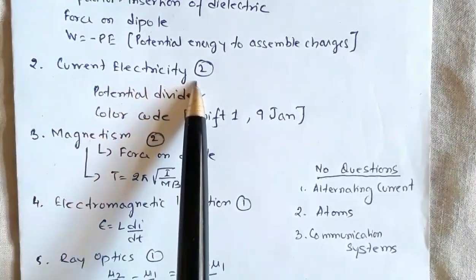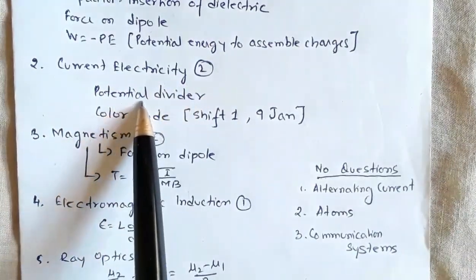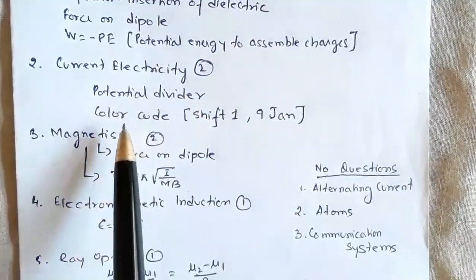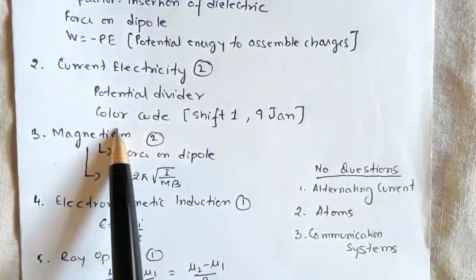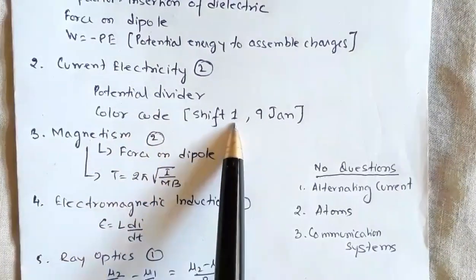There were two questions from current electricity: one based on the topic of potential divider, one based on color code of resistor. This similar question on color coding of resistor was asked in shift 1 on 9 January.